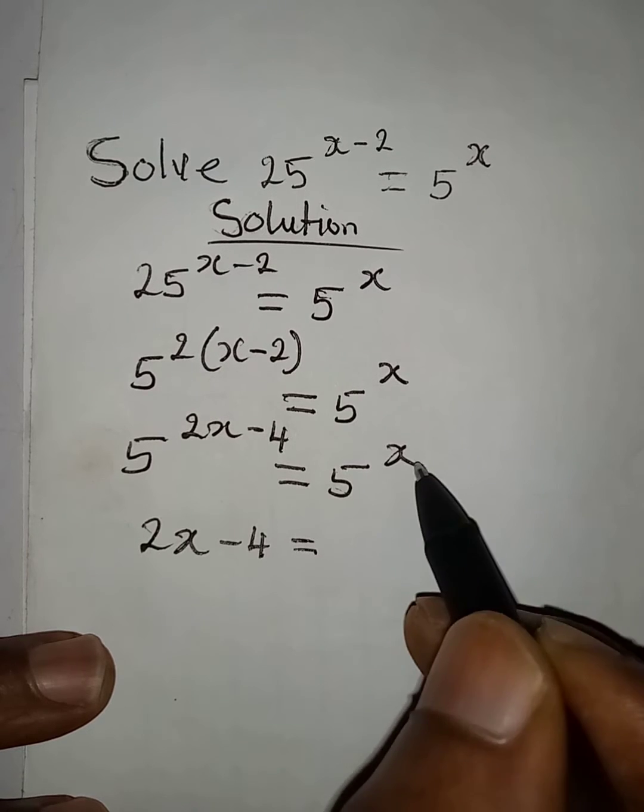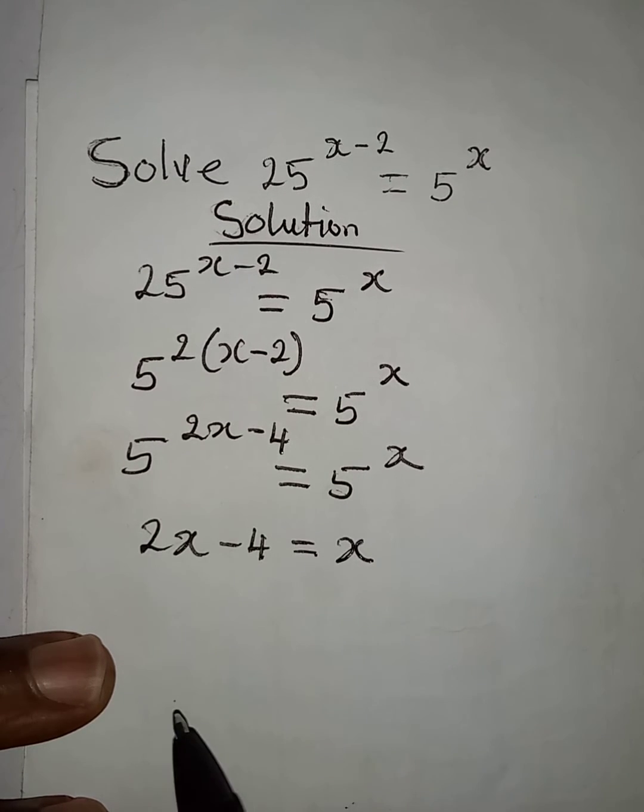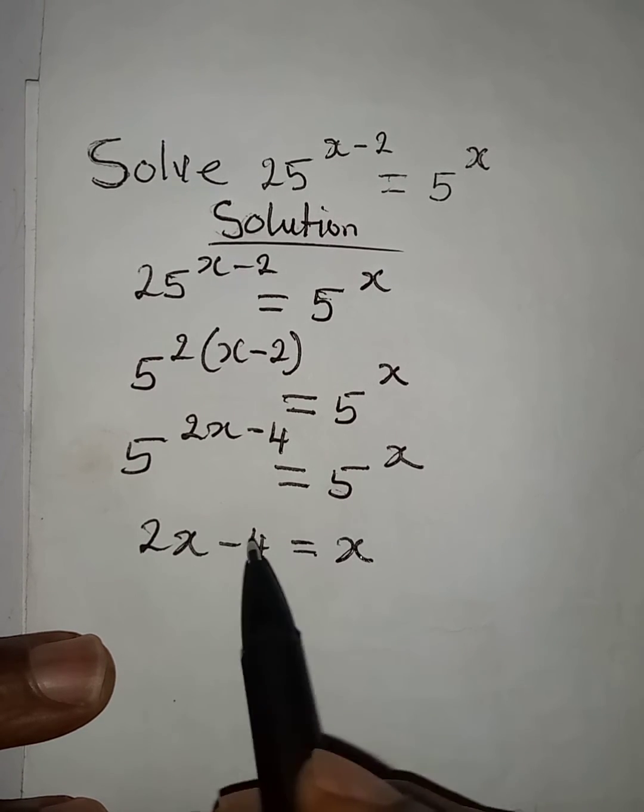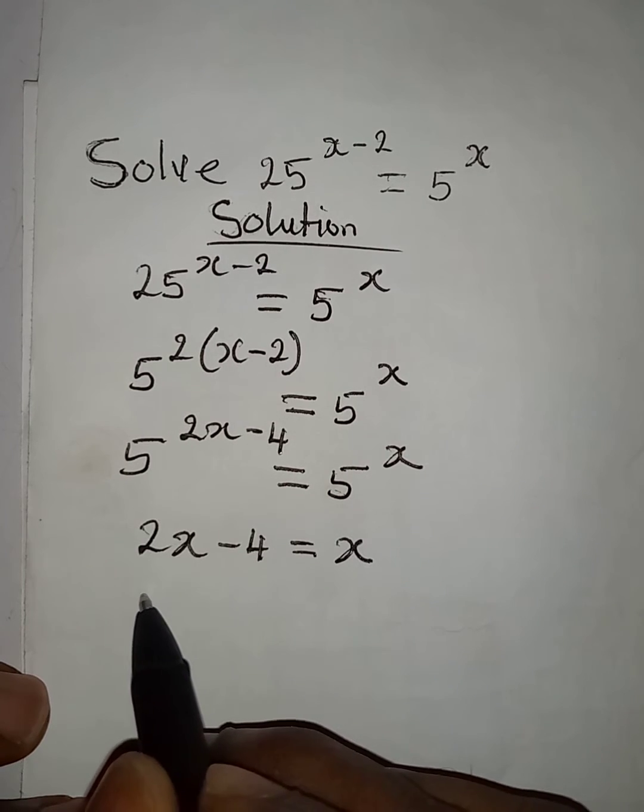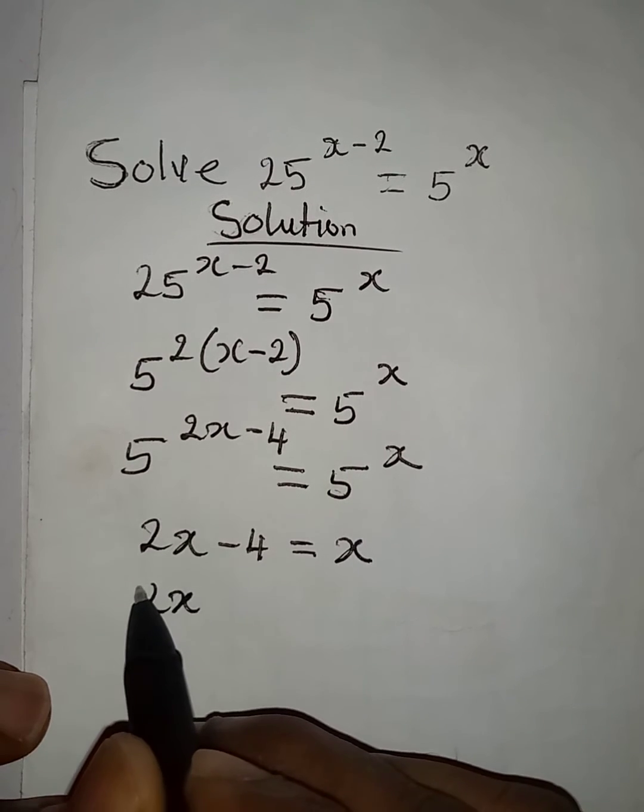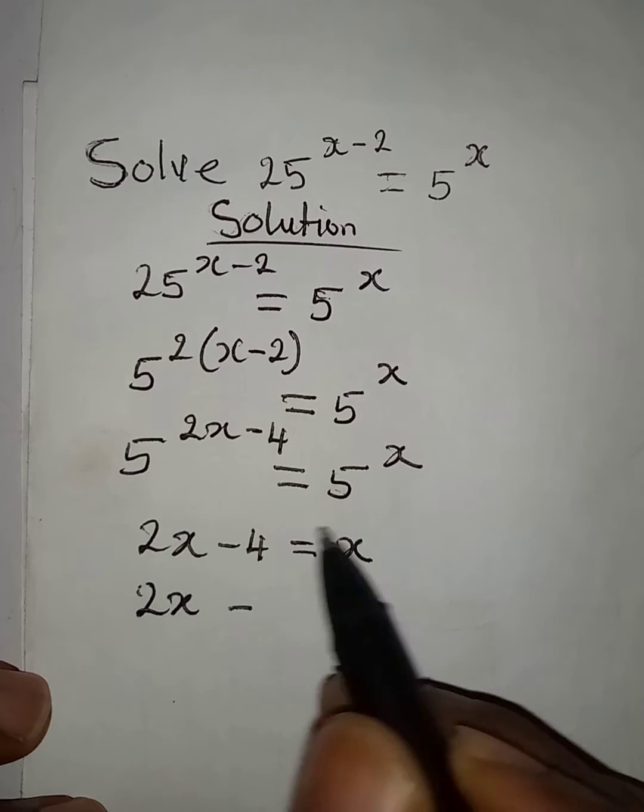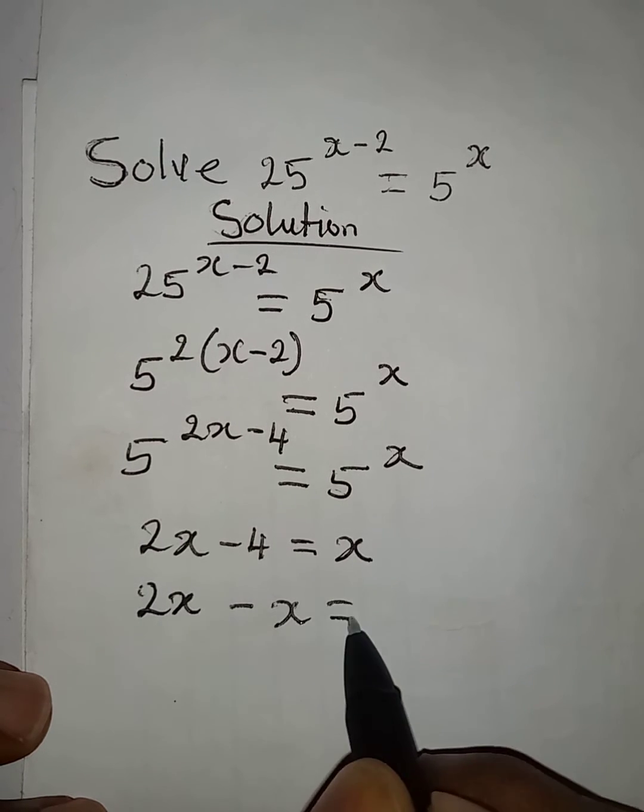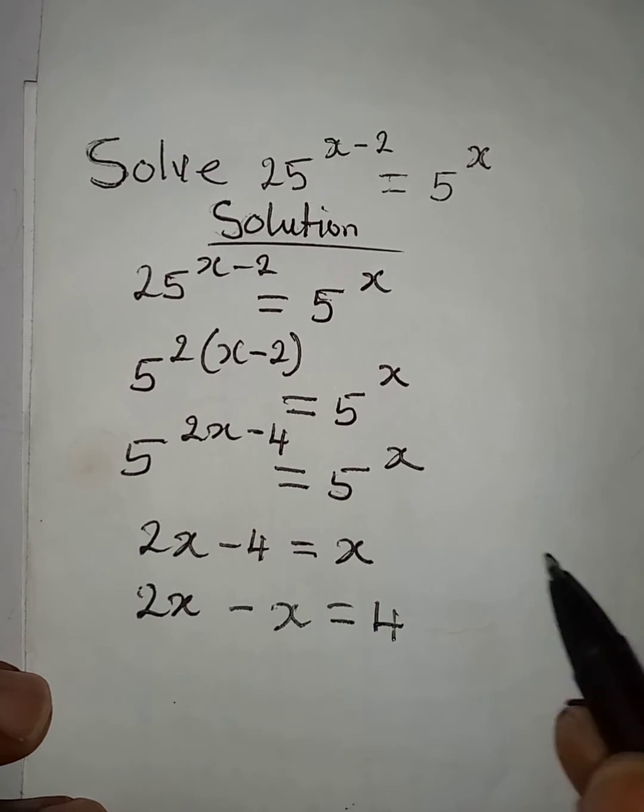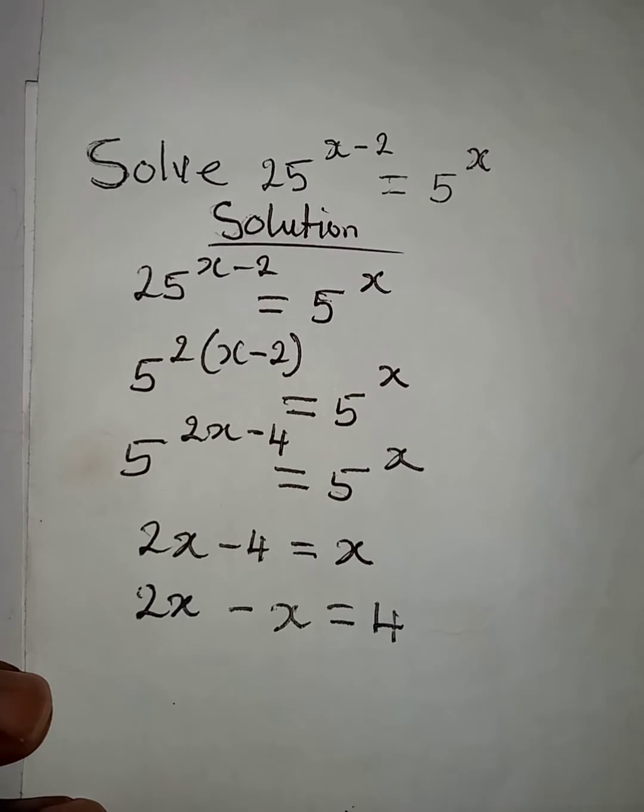The next thing to be done is to collect like terms, and then we will have 2x minus x equals 4, because negative 4 will become plus 4 on the right hand side.